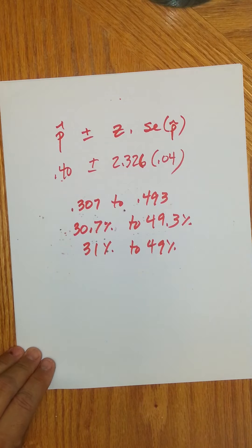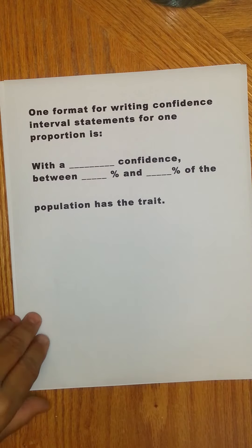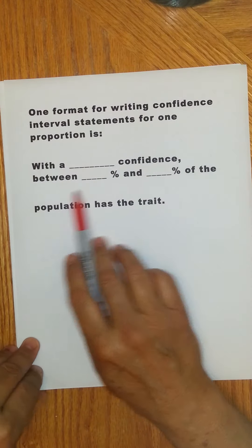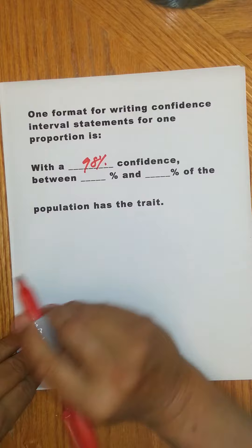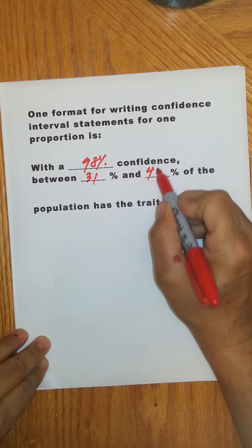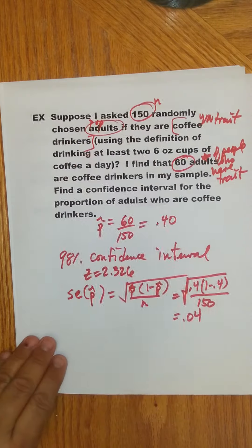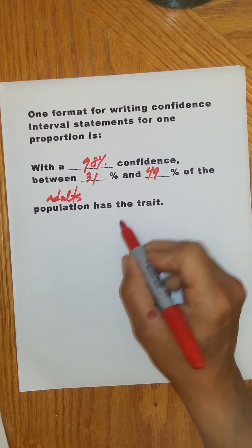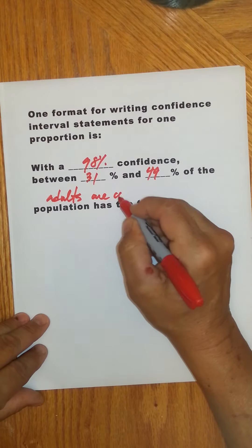So now, the way you'd want to interpret that is say, this is just one example of a format you could use, with a blank confidence between this percent and this percent of the population that has the trait. So let's go ahead and fill that in. I would say with a 98% confidence, between 31% and 49% of, in this case, our population, remember, was adults. So adults have the trait, and the trait is that they're coffee drinkers. So you'd say, are coffee drinkers.